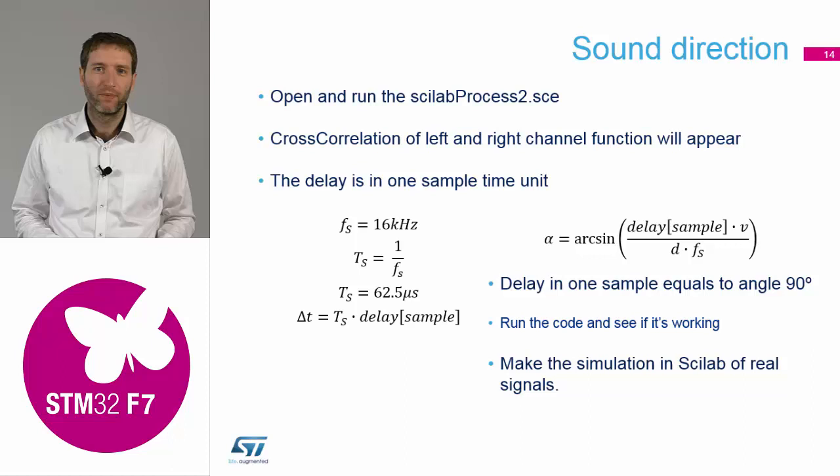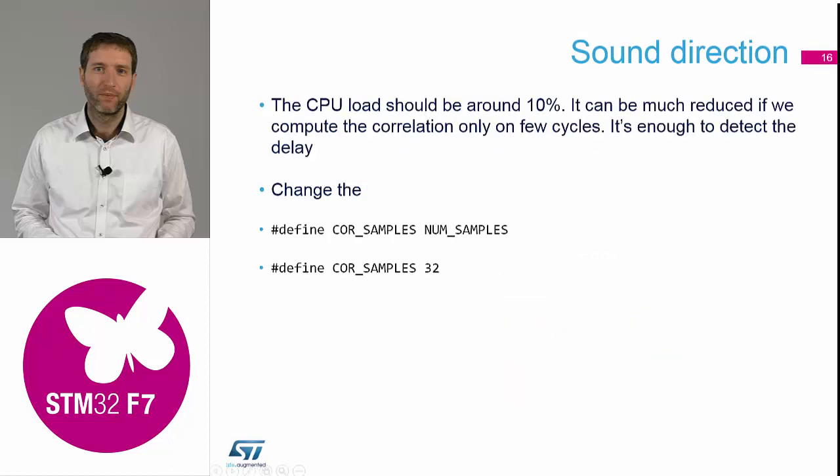What we've seen: the delay works quite well. We're able to see the angle, but the angle is only equal to 90 degrees or plus minus 90 degrees. Why? Because the sampling rate is 16 kilohertz, and the speed of sound at 16 kilohertz is exactly 2.1 centimeters. So it's not by chance that we put it at 2.1 centimeters. If you decrease the correlation samples—how many samples you use as input for cross correlation—you can use 16, 32, 64.